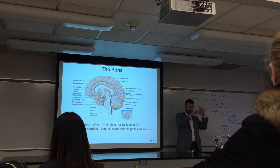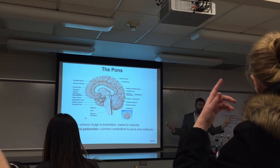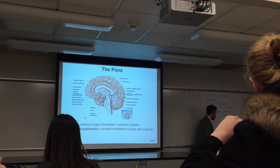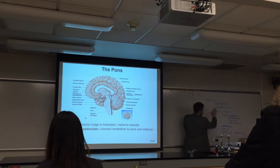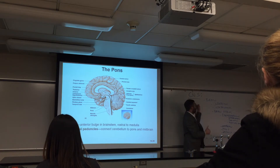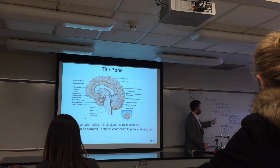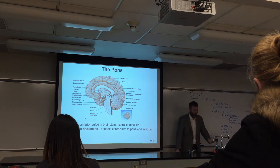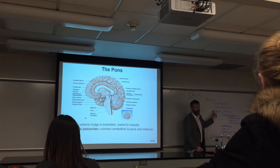The brain itself is a very complex structure. It is made of three main regions. I'm going to put the spinal cord on the bottom — the central nervous system is the brain and the spinal cord. The brain is made up of three major regions: the brain stem, the cerebellum, and the cerebrum.